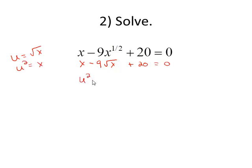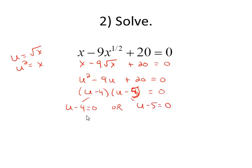So I have u squared minus 9u plus 20 equals zero. Factor u minus 4, u minus 5. Two numbers that multiplied to 20 but added to negative 9. Break it up. u minus 4 equals 0 or u minus 5 equals 0. Our two solutions so far are u equals 4 and u equals 5.